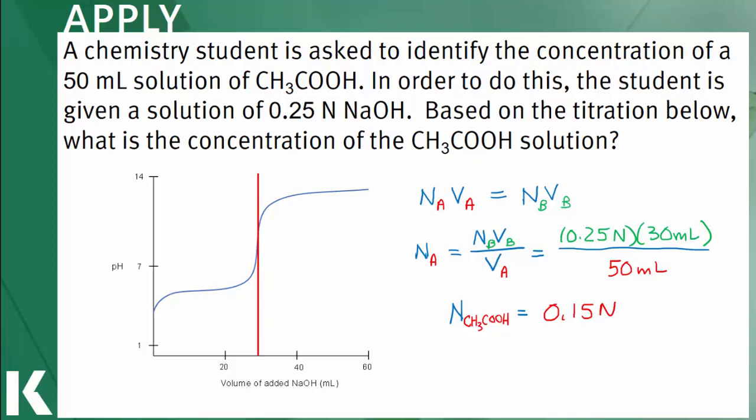Notice in this case, the pH at the equivalence point is not 7, which is reflective of the fact that the titration is between a weak acid and a strong base.